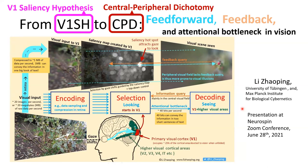This is a very busy slide, but we are going to dissect it little by little. The title is 'From VISH to CPD,' which means from the V1 Saliency Hypothesis to the Central Peripheral Dichotomy.